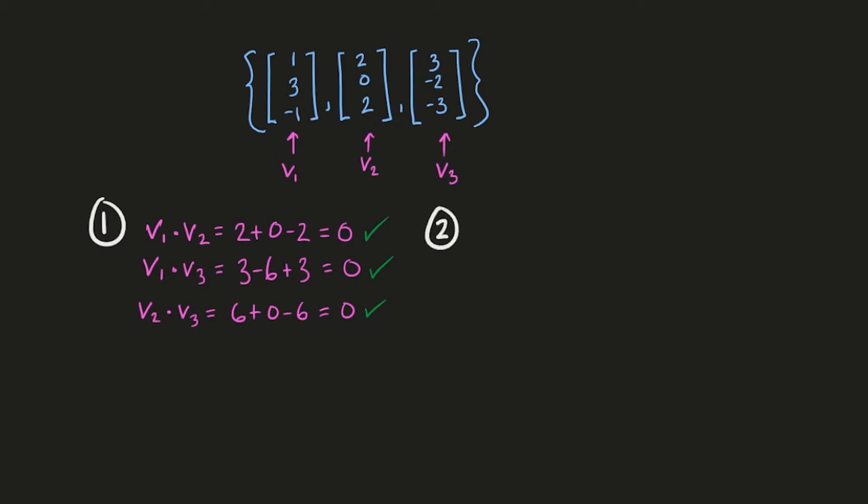Now that we're done with this, we can move on to step 2. Step 2 is just finding the length of each vector. Basically you just find the square of each component and take the square root of all of that. So for v1 here, it's 1 squared plus 3 squared plus negative 1 squared, which is 11, so the square root of 11 is the length.